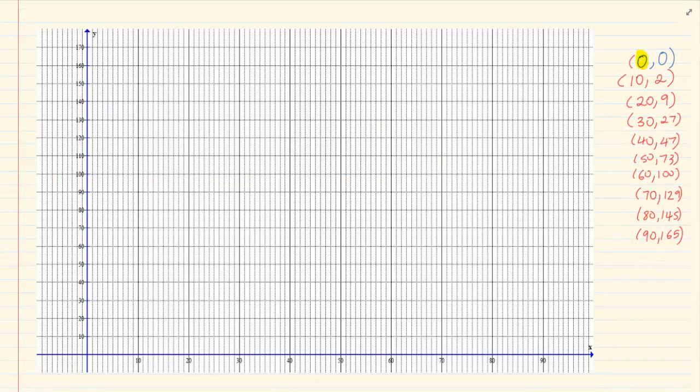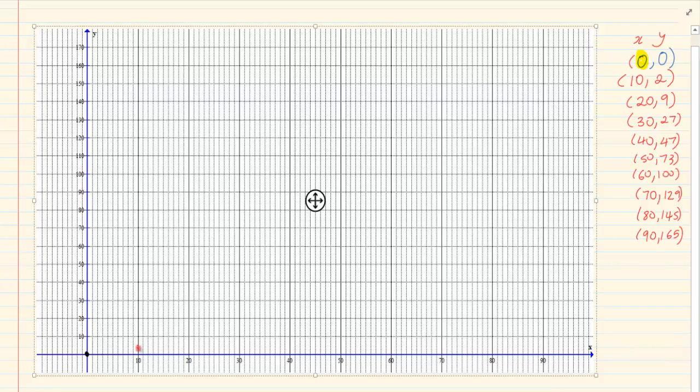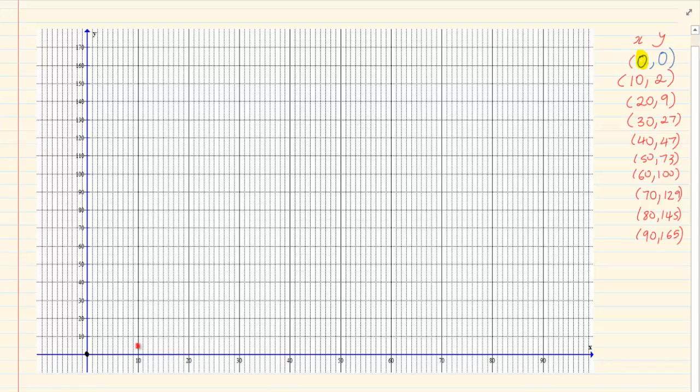So we are going to start with 0 and 0. Then we have got 10 and 2. Now remember, this is your X and this is your Y. So when I say 10 and 2, then I am around there. You must estimate. Sometimes they don't give you all the points in the diagram sheet. Then we have got 20 and 9, so 20 and 9 is about there.